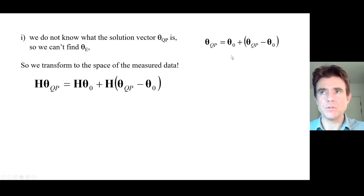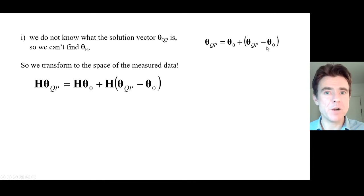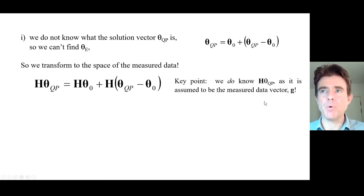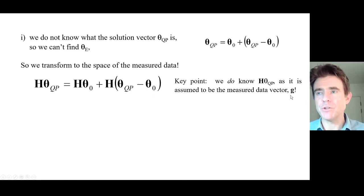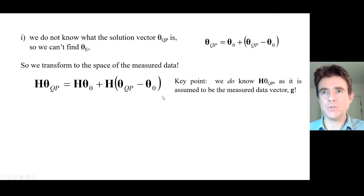The first problem is we don't know the solution. What we do is take the expression we started with — the error expressed as a summation of orthogonal search directions — and apply the matrix H to every single term. That gives us H theta qp, H theta zero, plus H times the error. The key point is that we now know H times the solution, because we're claiming that H times where we want to be equals the measured data vector g. So it's like transforming to the domain of the measurement where we do know what we measured.